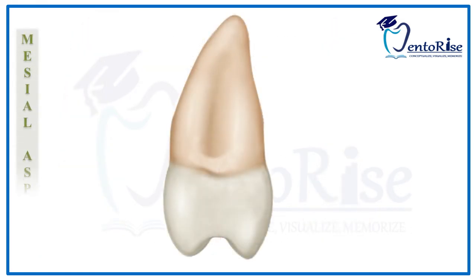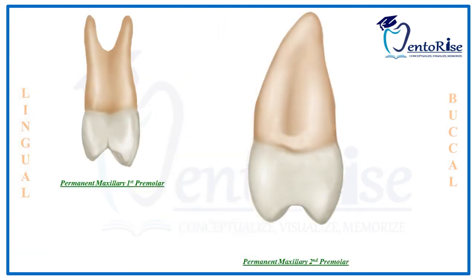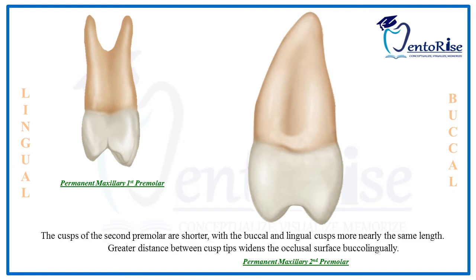Coming to the mesial aspect, the buccolingual dimension at the crest of contour is 9 mm while the buccolingual dimension at the cervix is 8 mm — similar to the permanent maxillary first premolar. Since the lingual cusp of the permanent maxillary second premolar is greater in length, the buccal cusp and the lingual cusp are more nearly the same length. Because of this, the distance between the cusp tips increases and this widens the occlusal surface buccolingually. Please observe the figure carefully to understand this difference between the two teeth.